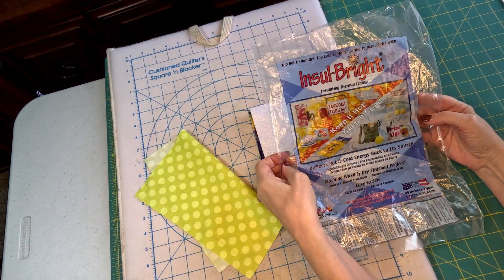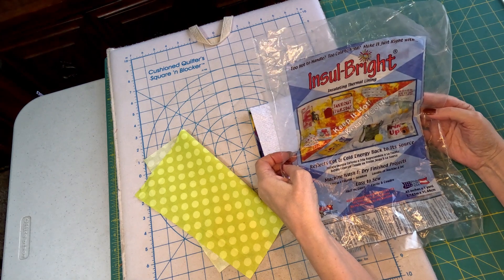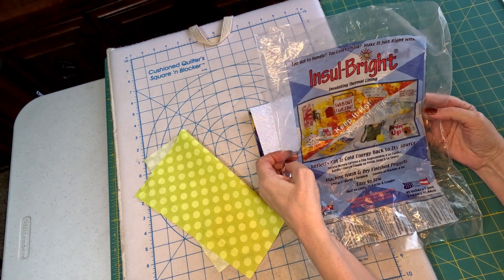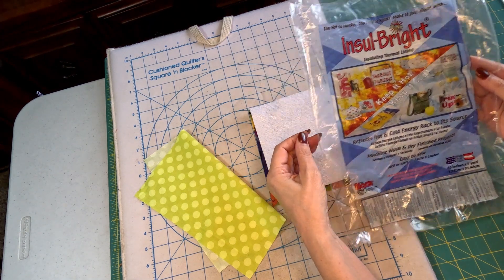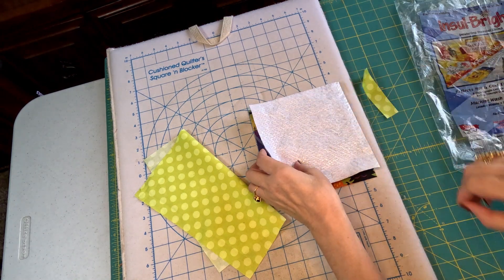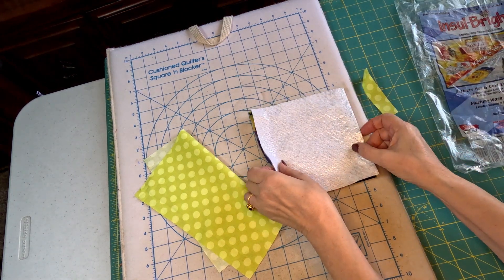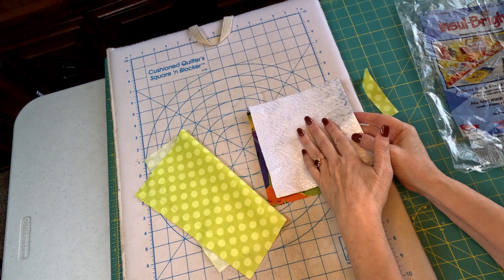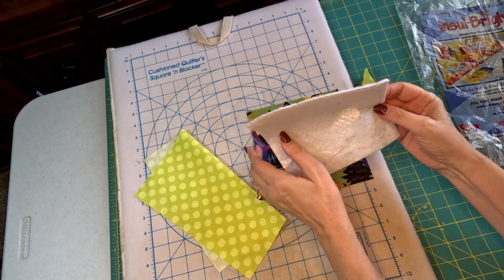This is what the package looks like, and it is insulated batting. So, it will protect your hands from the heat much better. So, we cut a 7 inch square of that.